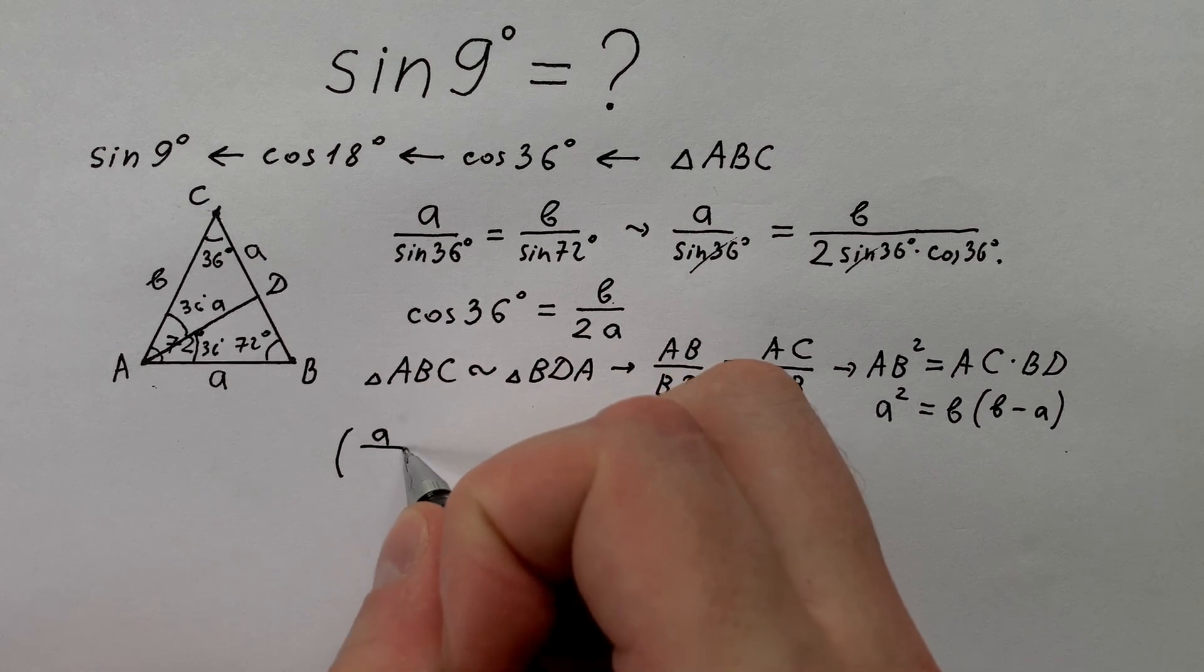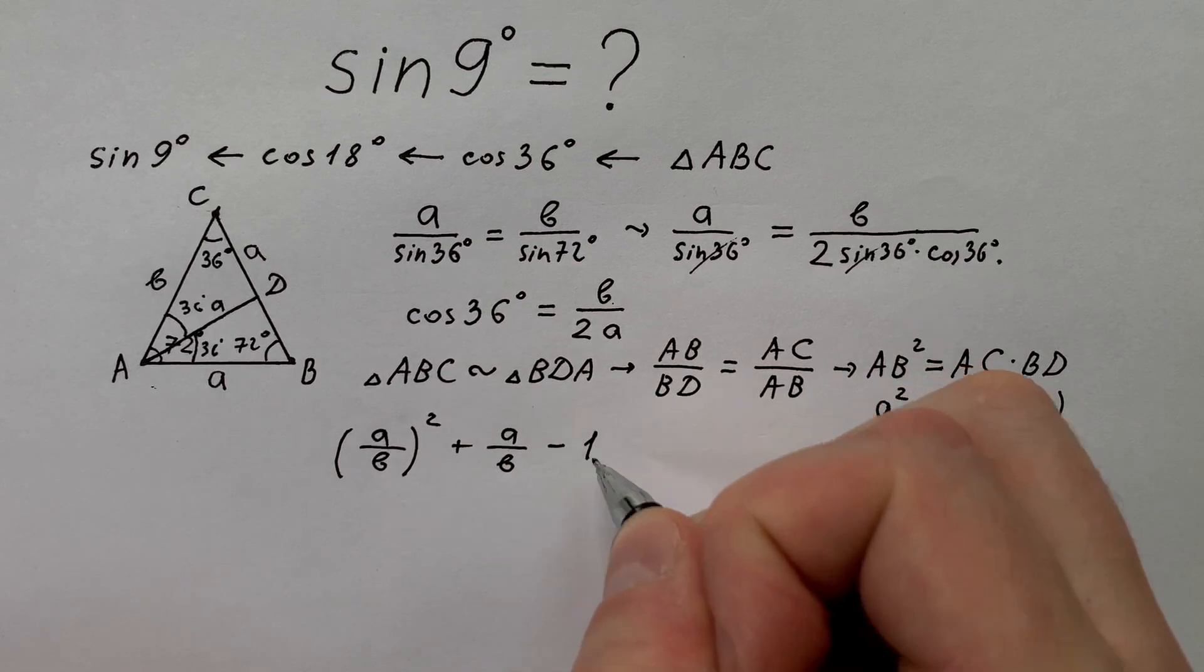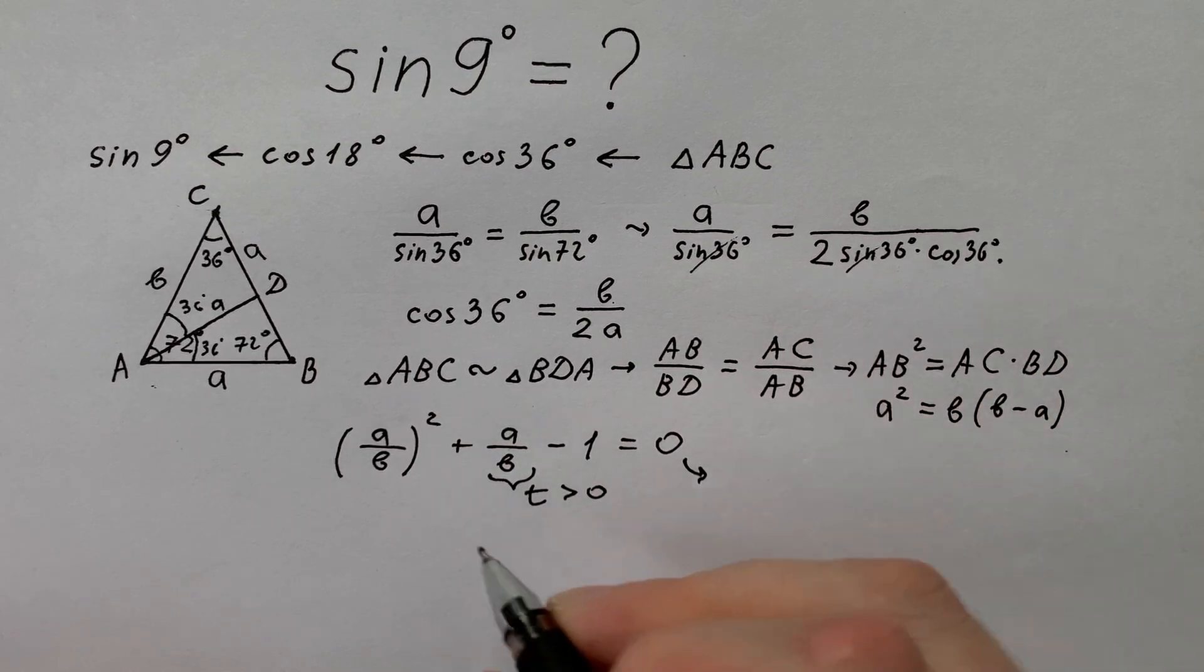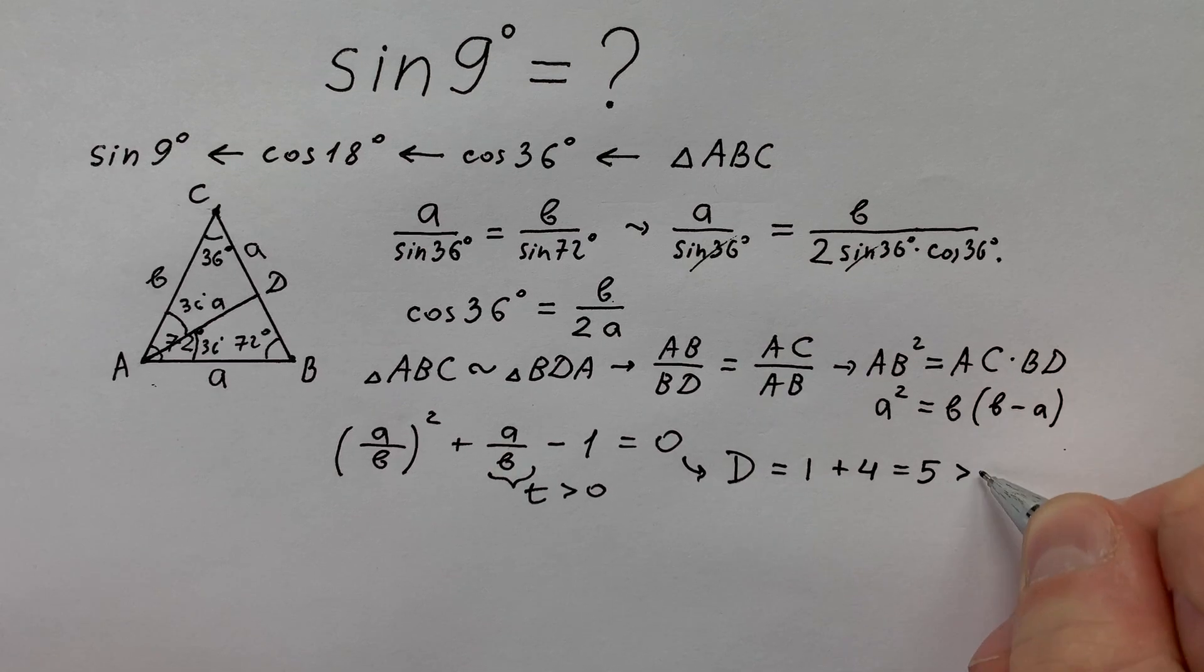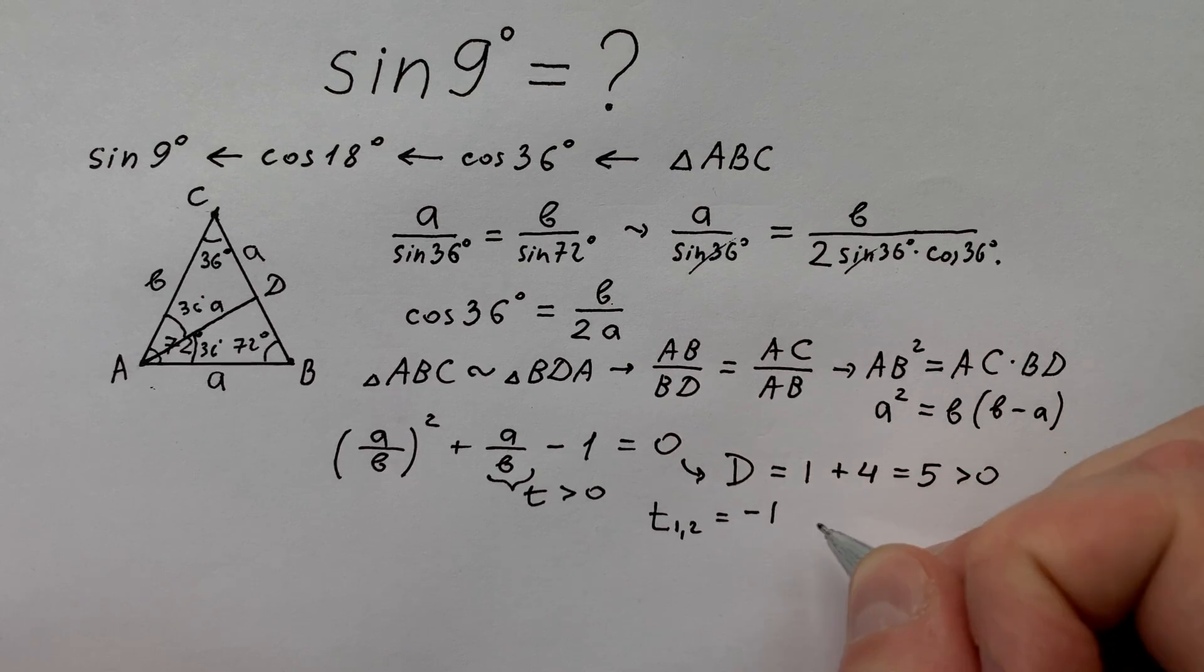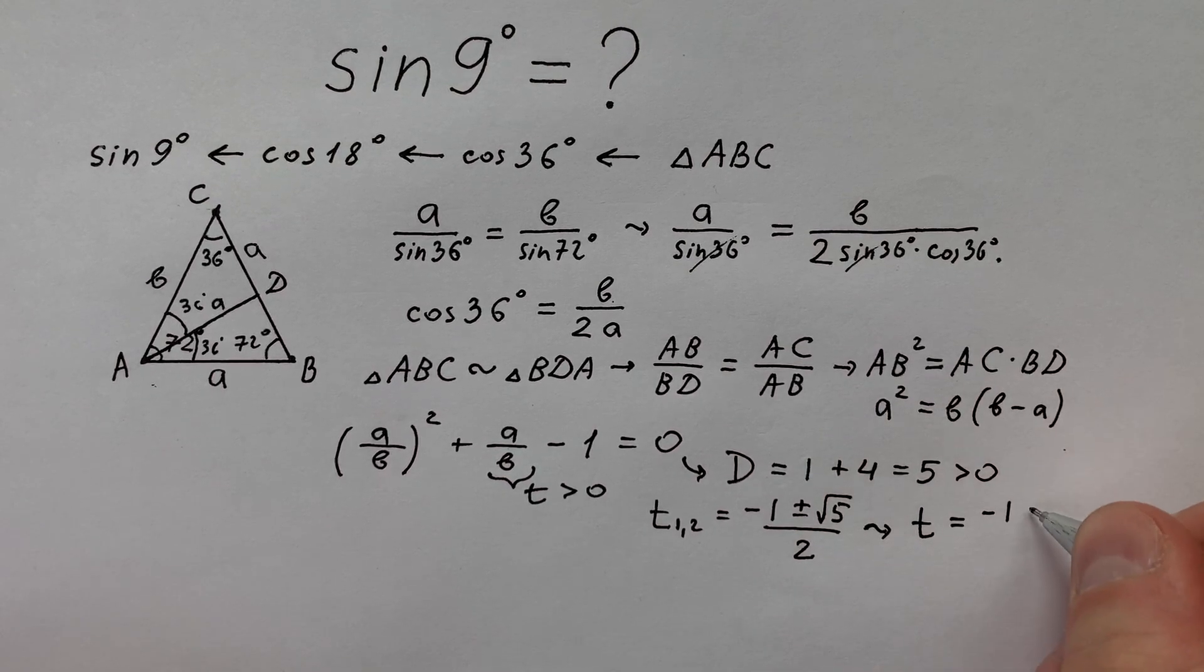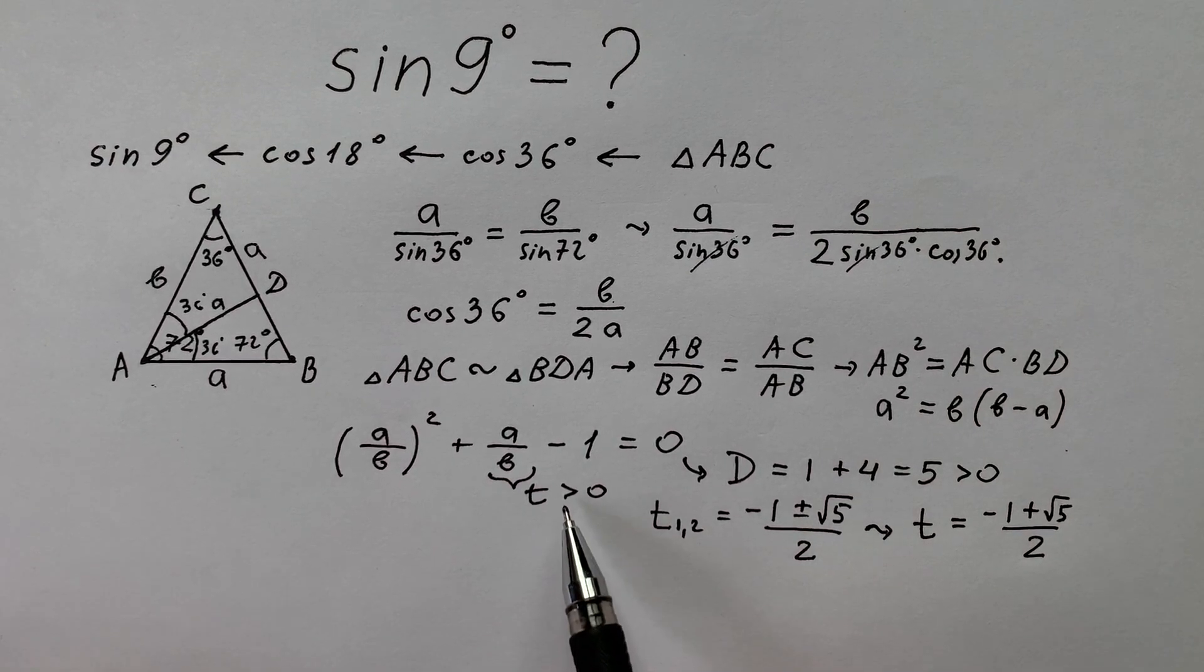We get a divided by b squared plus a divided by b minus 1 equals to 0. Let a divided by b equals to t. Of course t is bigger than 0. So from this quadratic equation discriminant equals to 1 plus 4 equals to 5. Very good. It's bigger than 0. That's why t equals minus 1 plus or minus square root 5 divided by 2. And from these two answers we need only t equals minus 1 plus square root 5 divided by 2, because another t with minus is less than 0.